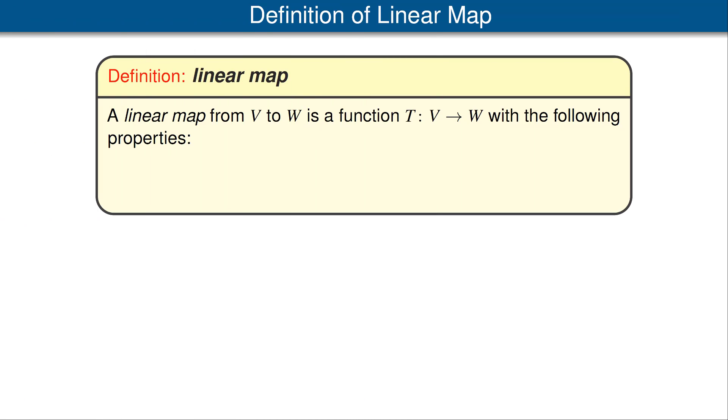In previous videos, we've discussed vector spaces. Actually, the real interest in linear algebra is not so much on vector spaces, but on linear maps between vector spaces. Thus, we're now ready for that crucial definition. A linear map from a vector space V to a vector space W is a function from V to W that satisfies two properties.